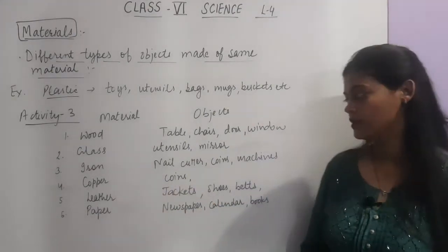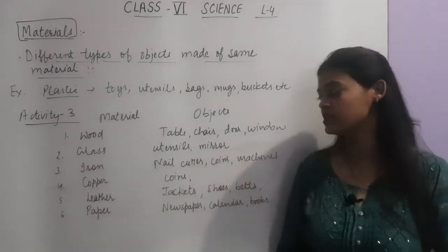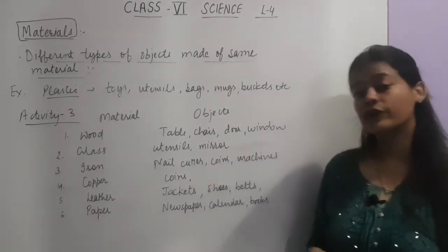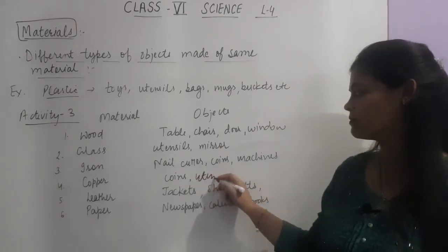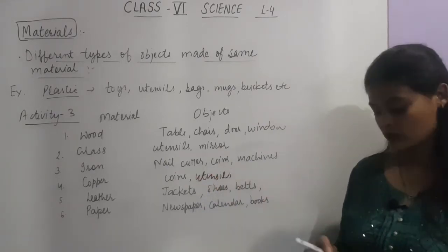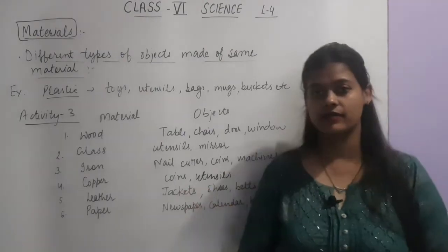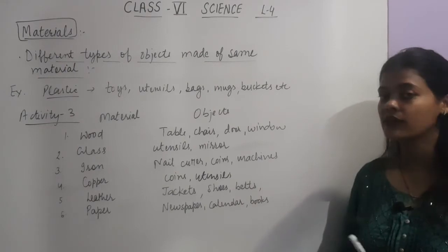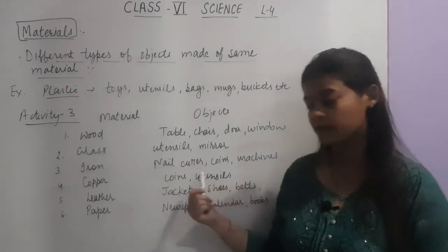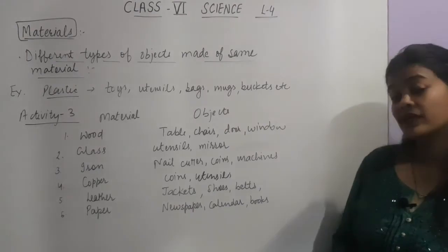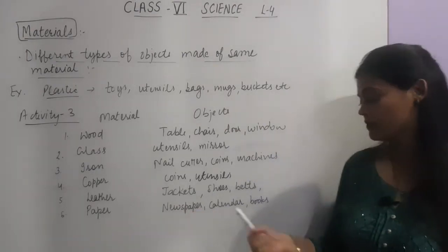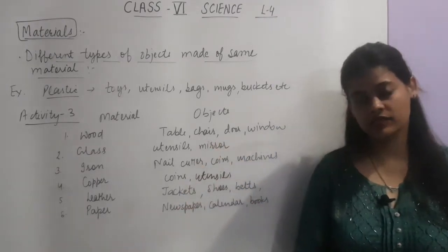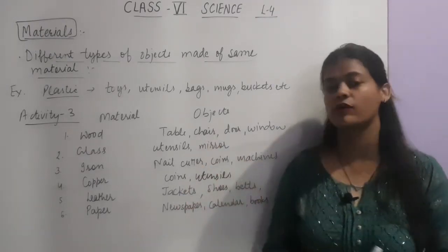Next is copper — copper is a material generally used for making coins and copper utensils. Next is leather — leather can be used to make jackets, shoes, and belts; all these things are made up of leather. Next is paper — paper can be used to make newspapers, calendars, and books. So these are the various objects that can be made from a single material.